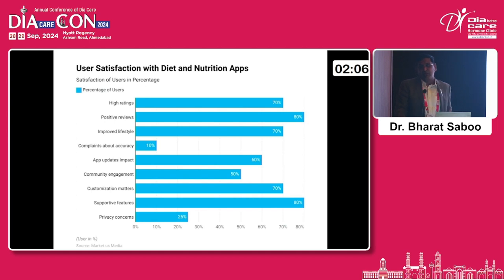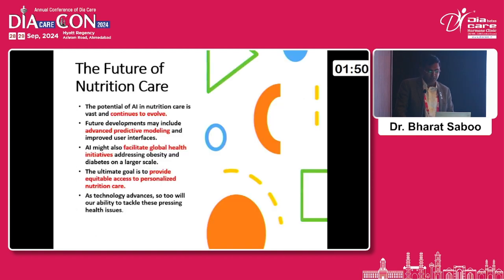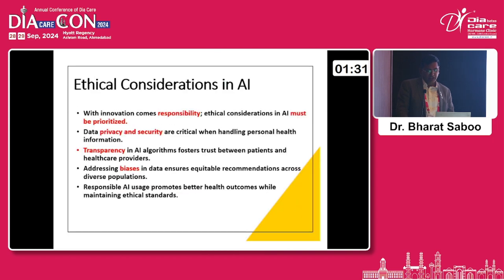Users who set specific goals in the app are 30% more likely to achieve those goals, and personalized recommendations lead to a 15% increase in user interaction. User satisfaction scores are high — 70% gave high ratings, 80% gave positive reviews, and only 10% complained about accuracy. This shows that mobile and AI-based apps are the future for personalized nutrition. The potential of AI in nutrition care is vast and will involve advanced predictive modeling and global health initiatives.